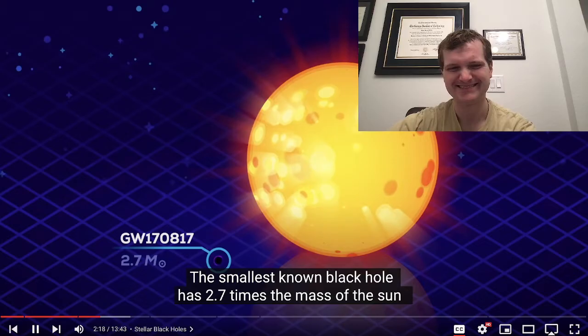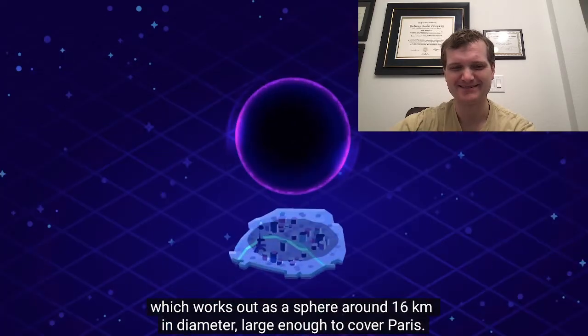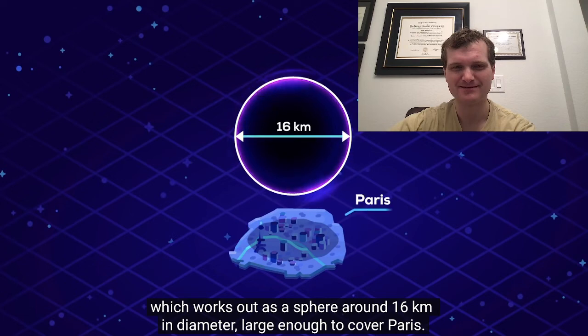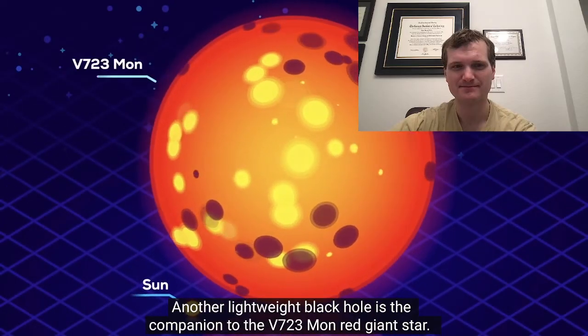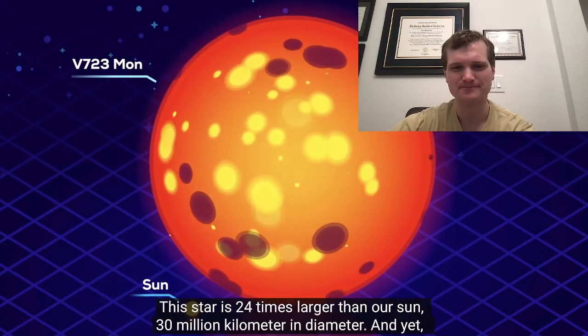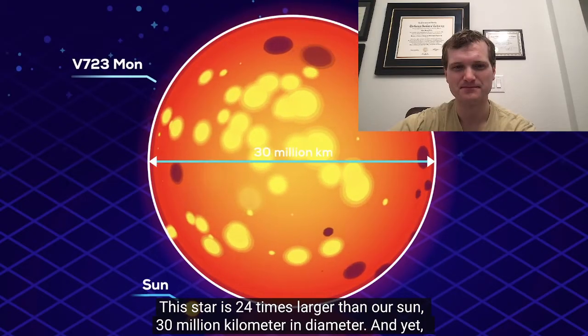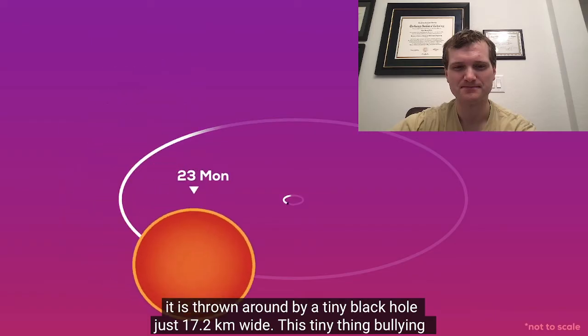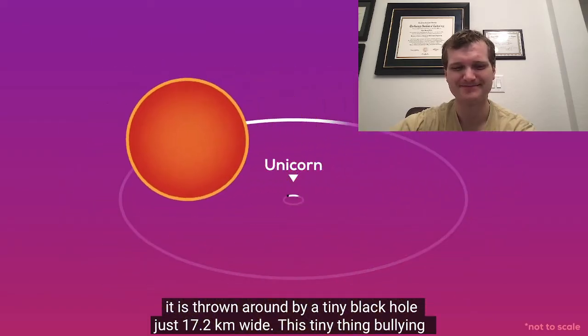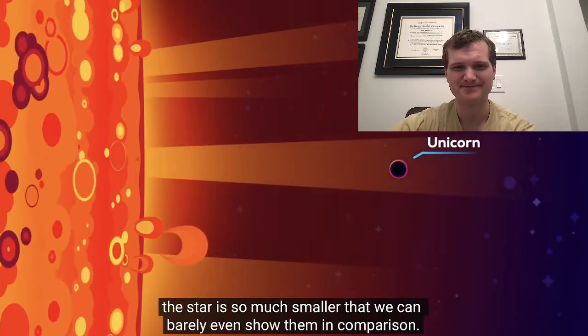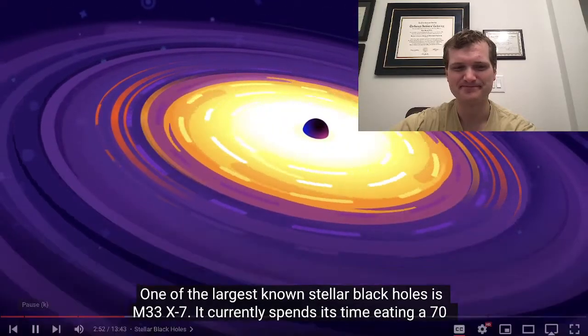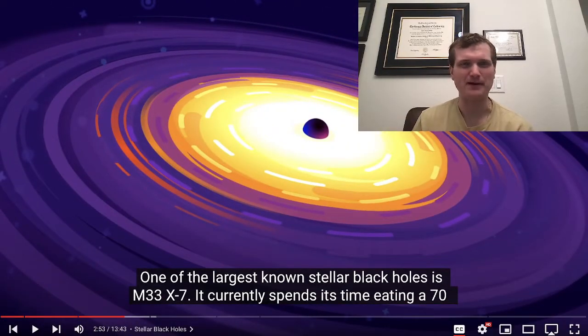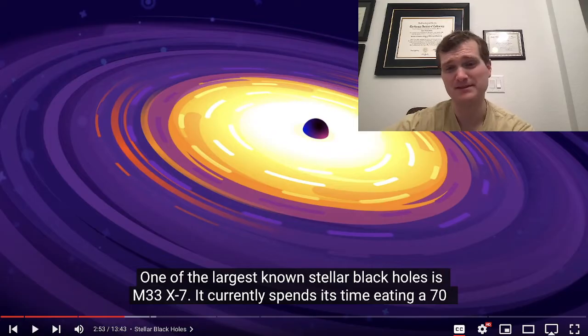The smallest known black hole has 2.7 times the mass of the Sun, which works out as a sphere around 16 kilometers in diameter, large enough to cover Paris. Another lightweight black hole is the companion to the V723 Mon red giant star. This star is 24 times larger than our Sun, 30 million kilometers in diameter, and yet it's thrown around by a tiny black hole just 17.2 kilometers wide. This tiny thing bullying the star is so much smaller that we can barely even show them in comparison. One of the largest known stellar black holes. Always fascinated just how dense and how powerful the gravitational energy is in these sort of things.